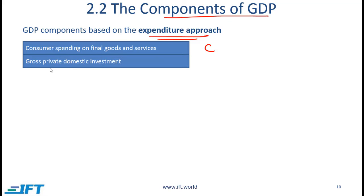Then we have gross private domestic investment, denoted by I. Note that this is private investment, meaning it is the investments made by private firms — entities other than the government. This investment amount also includes the change in inventory. For example, if inventory at the start of the period is 10 million and it increases to 15 million, the increase of 5 million is also part of investment. The larger investment, though, typically would be the investment in property, plant, equipment, and so on.